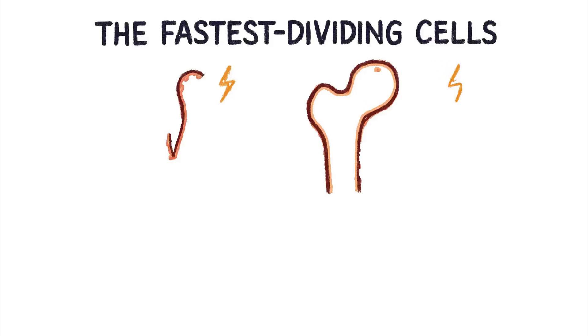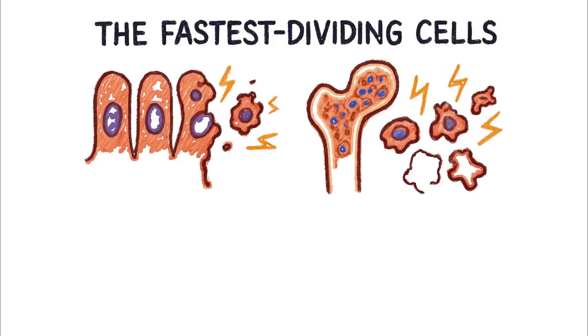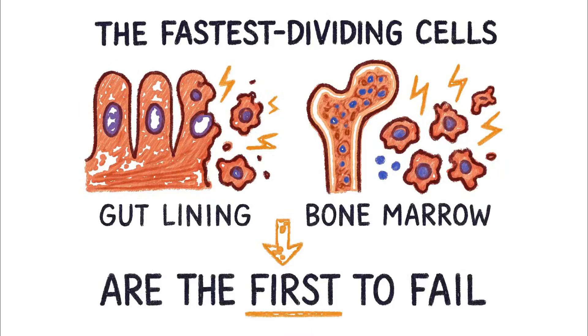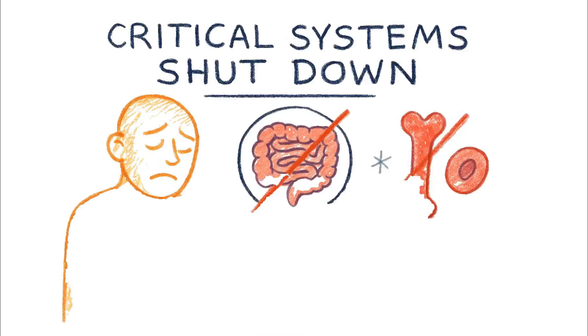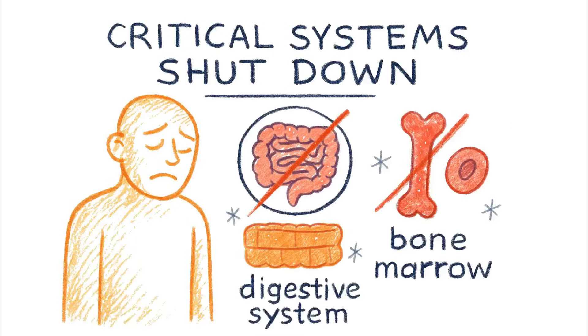This is the source of acute radiation syndrome, or ARS. The fastest dividing cells in your body, in your gut lining, your bone marrow, are the first to fail. Without the ability to regenerate, your most critical systems simply shut down.